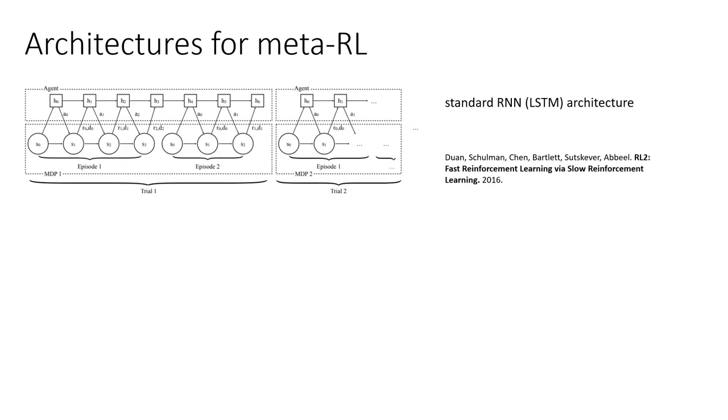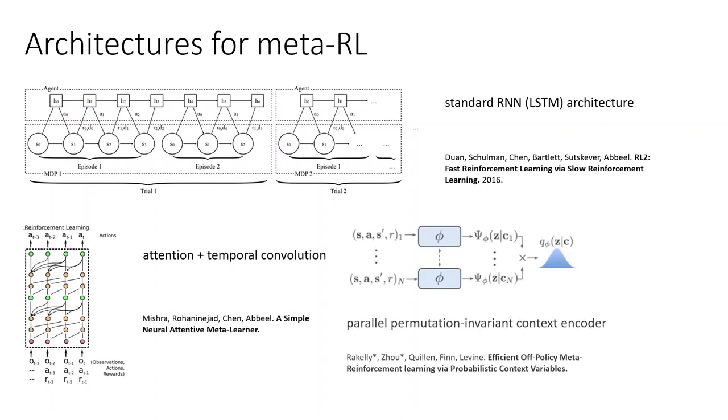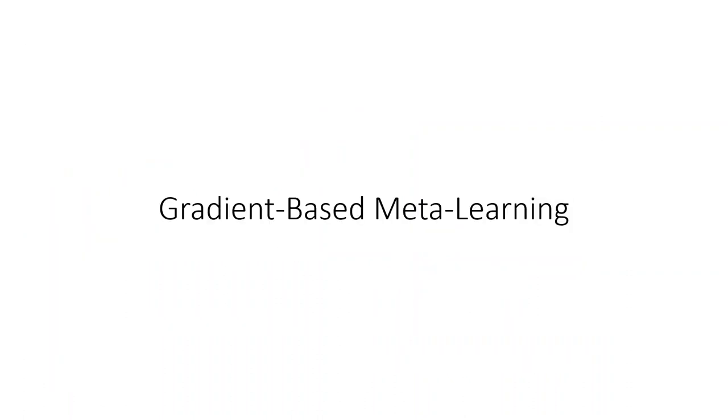There are, of course, a variety of architectural choices. A standard RNN architecture would just basically concatenate all the different episodes into one long history, into meta episodes. There have also been methods that have been proposed that use attention and temporal convolution, as well as parallel encoders. I'll talk about those a little bit later, as well as transformers. So if you want to learn more about architectures for this, then maybe check out these papers, and I'll stop there.